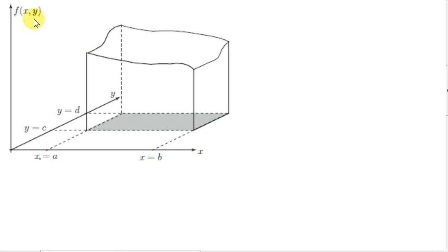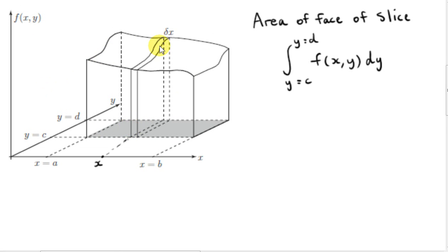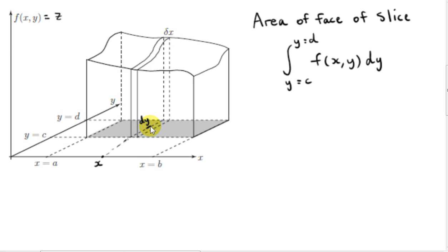Here we have a graph of the surface f(x,y), and we want to get the volume between the surface and the xy plane. We consider a slice through the surface that is parallel to the yz plane. This slice has thickness delta x. Now we know that the area between this curve and the xy plane is given by the integral — integration just involves summing infinitely many thin rectangles with dy in this case.